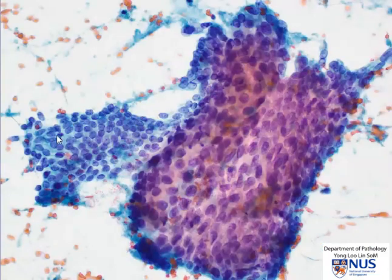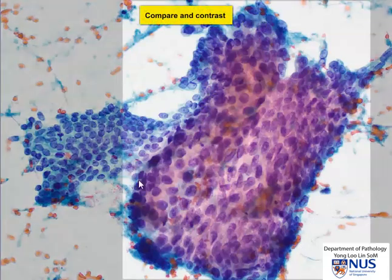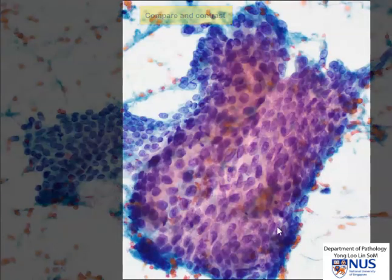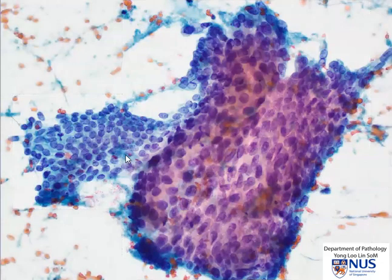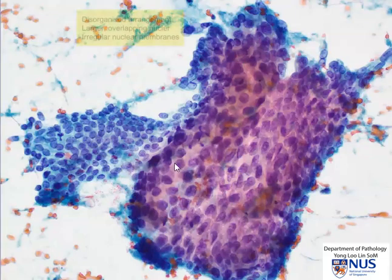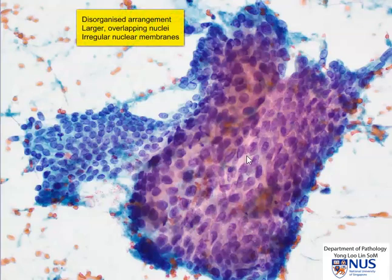When we look at this area, I just want to contrast the difference between this abnormal sheet here and this normal sheet here. This again is contaminant GI epithelium — a very regular honeycomb arrangement of cells. In contrast, this sheet here shows much larger nuclei, but also the arrangement is very irregular. Some of the nuclei are overlapping, sitting on top of each other, and there isn't this very uniform honeycomb arrangement.